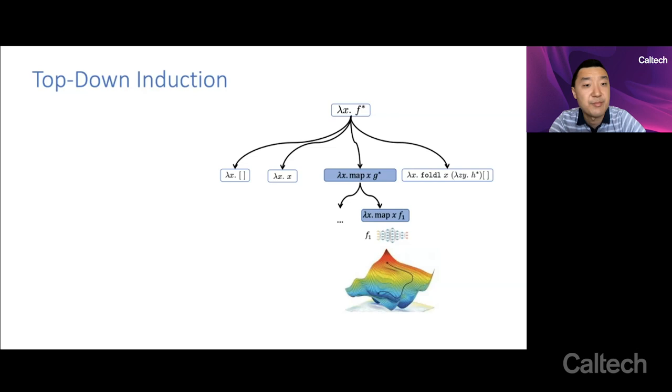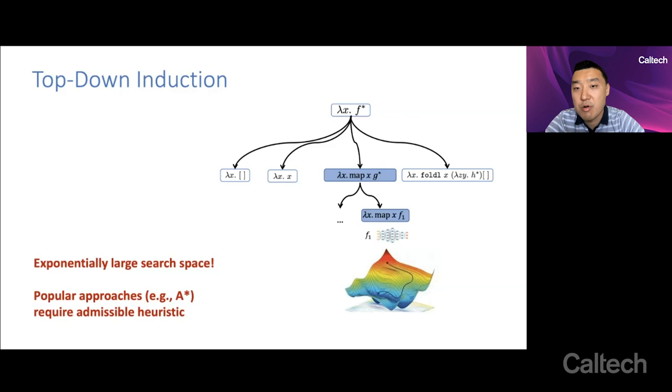And so this is an exponentially large search space. You face the same problem in neural architecture search where you're searching for neural architectures. For top-down induction, a popular approach, such as A-star search, they require what's known as an admissible heuristic, or a way to bound the cost to go as you're performing top-down search in order to do much better than brute force search.